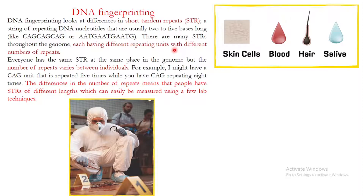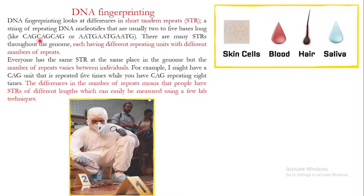There are many STRs throughout the human genome, each having different repeating units with a different number of repeats. Every individual has the same STR at the same location in the genome, but the number of repeats varies between individuals. The repeating units themselves can differ, and the number of repeating units also differs between STRs.